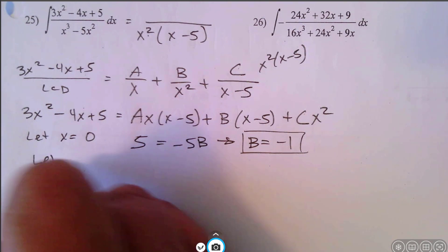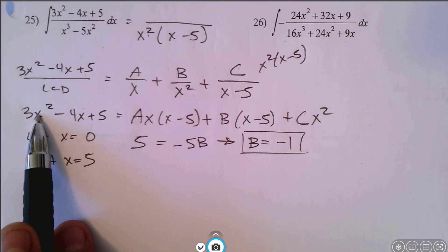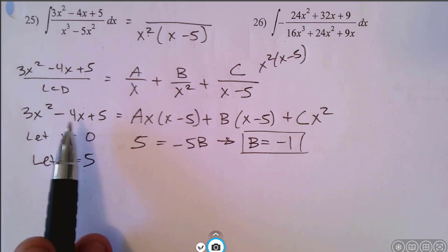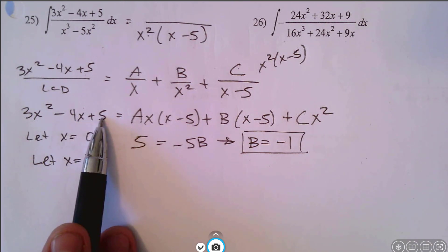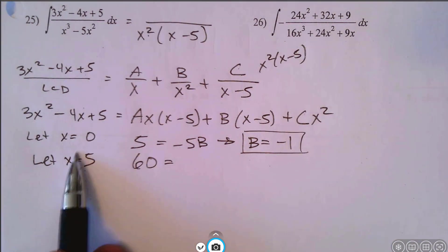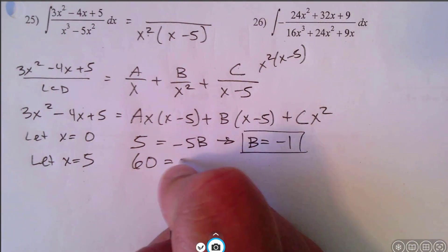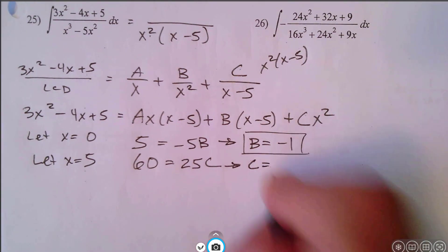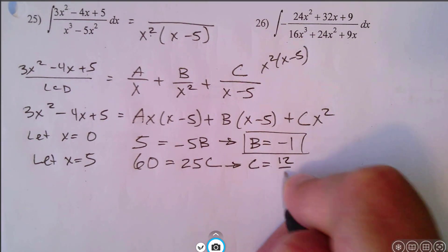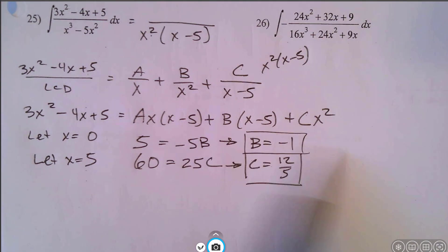Now let x equal 5 so the a and b terms disappear. On the left: 5 squared is 25, times 3 is 75, minus 4 times 5 is 20, so 75 minus 20 is 55, plus 5 is 60. On the right, 5 squared is 25, so 60 equals 25c, and c equals 60 over 25 which reduces to 12 fifths. But notice that a disappeared both times, so we still need to find a.